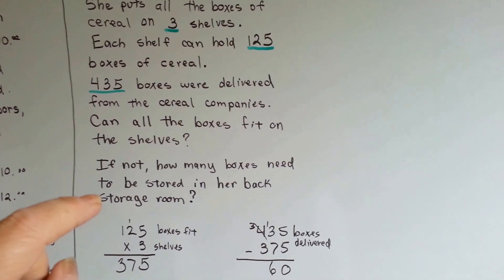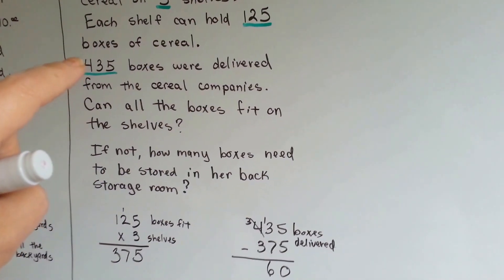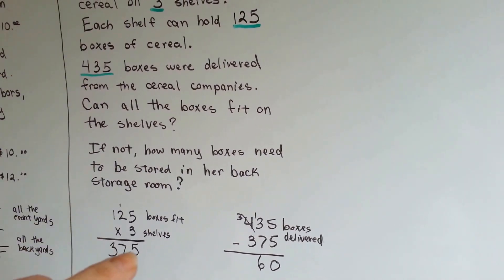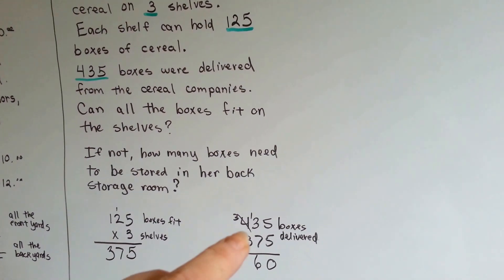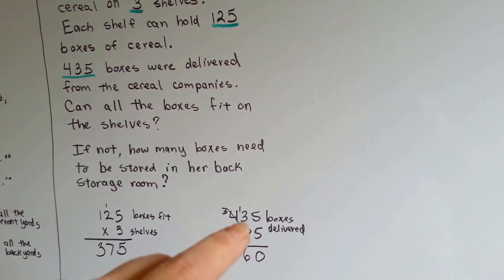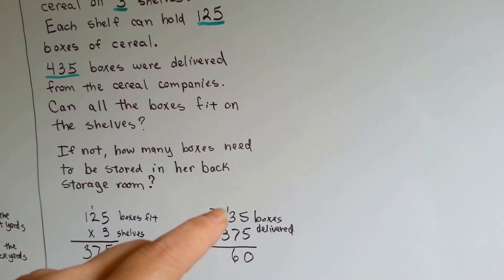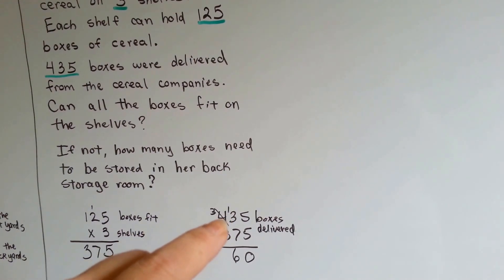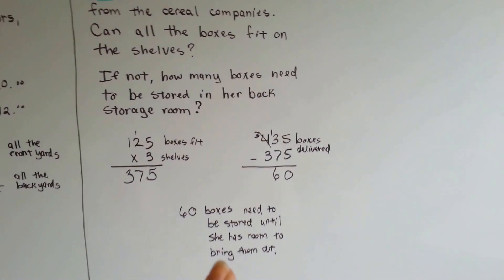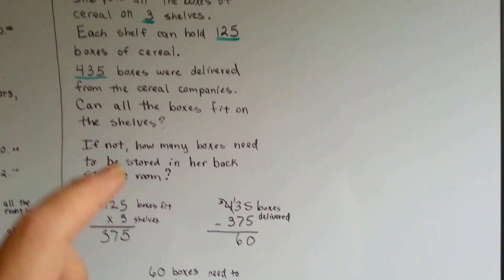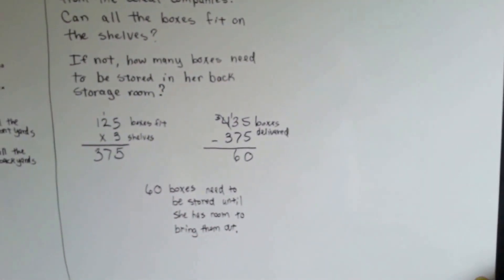So if not, how many boxes need to be stored in the back of her store in the storage room? So we take the four hundred and thirty-five and we subtract the total that she put on the shelves, the three hundred and seventy-five. Five take away five is zero. Three take away seven we can't, so we borrow one from the hundreds place. It becomes a three and we give it to the tens place. Thirteen take away seven is six. So she needs to store sixty boxes of cereal in the back until she could sell some of the ones that are on the shelf and make room, and then she could bring them out and fill her shelves.